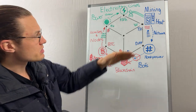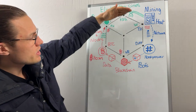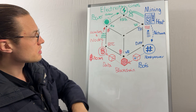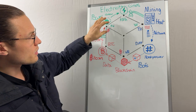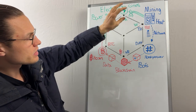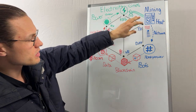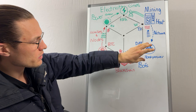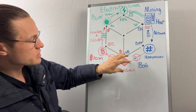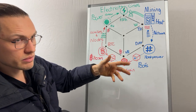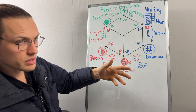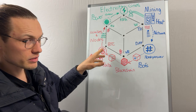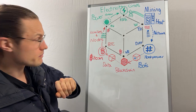The overall gist is that it's like a mirror image of the physical side. On the physical side we produce power, transfer it, and consume it over time. On the digital side we produce digital power, transfer it in data units of Bitcoin, and transfer it over time.